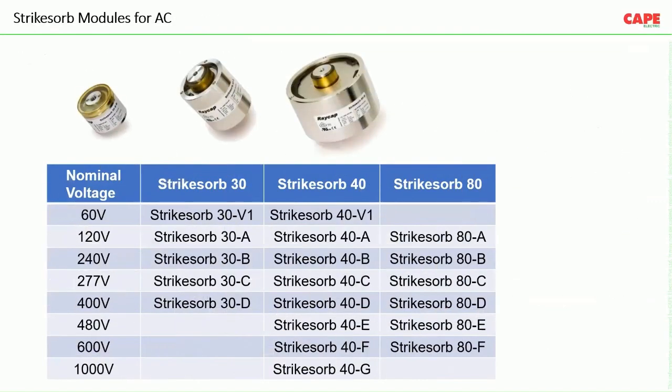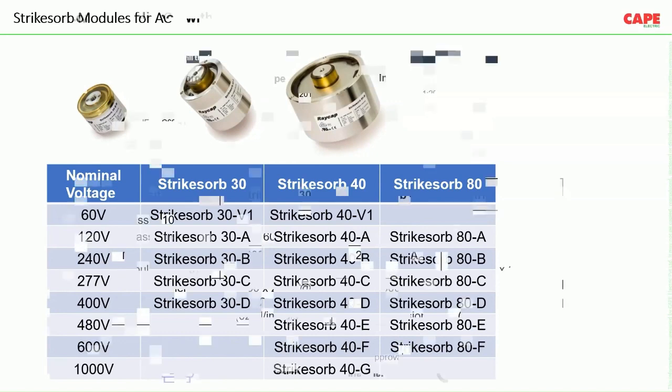Various models are available in the Strikes series of bus-bar-mounted SPDs: Strikes 30, 40, and 80, available in nominal voltages of 60V, 120V, 240V, 277V, 400V, 480V, 600V, and 1000V. Model variants include Strikes 30A/B/C/D, Strikes 40A/B/C/D/E/F/G, and Strikes 80A/B/C/D/E/F. All SPDs are tested per VDE and UL 1449 Fourth Edition.